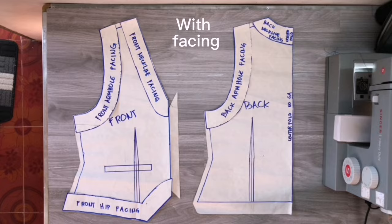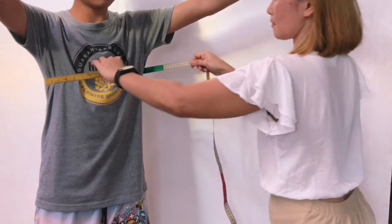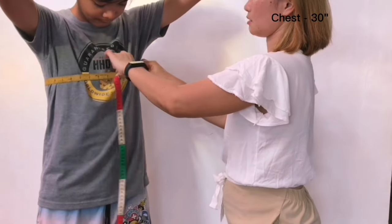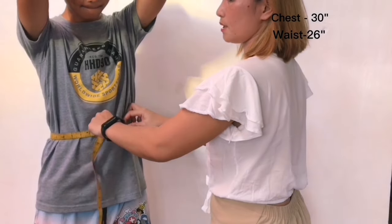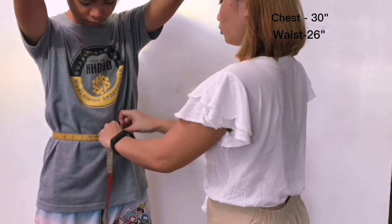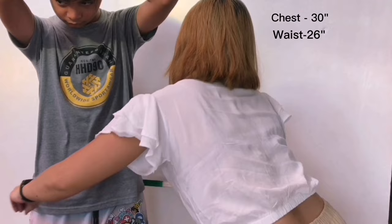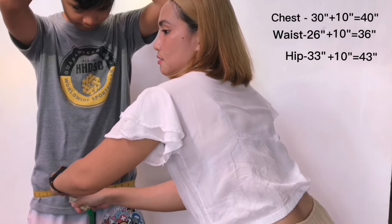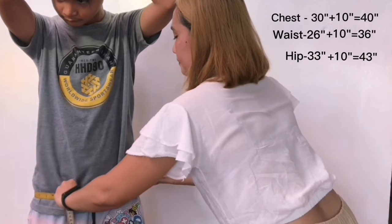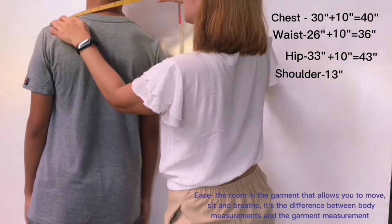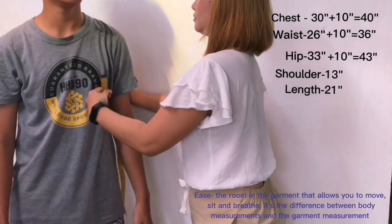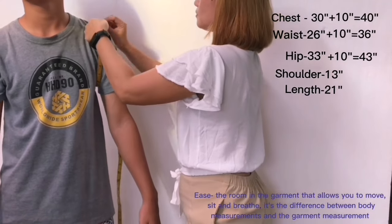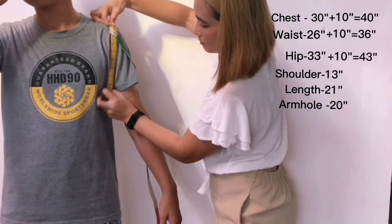First we need to get the body measurements. What I did is I took his exact bust, waist, and hip circumference, then added 10 inches on each measurement for ease. I did this because my son is in his adolescent age, which means he could grow rapidly, thus giving enough size allowance for his one year worth of growth.